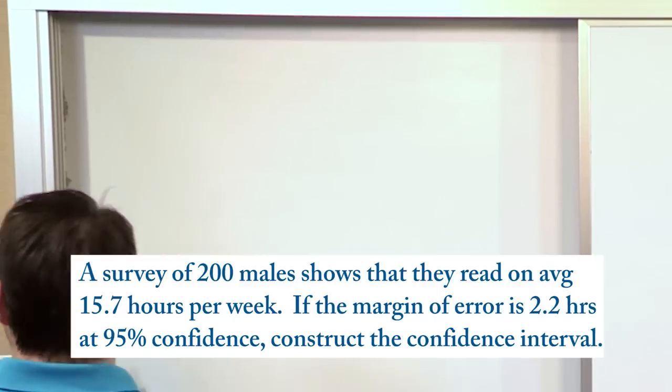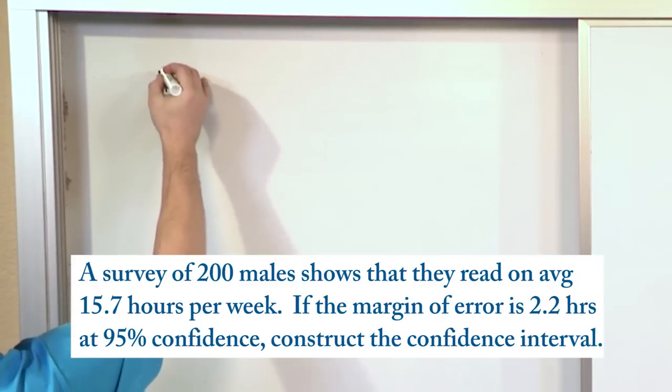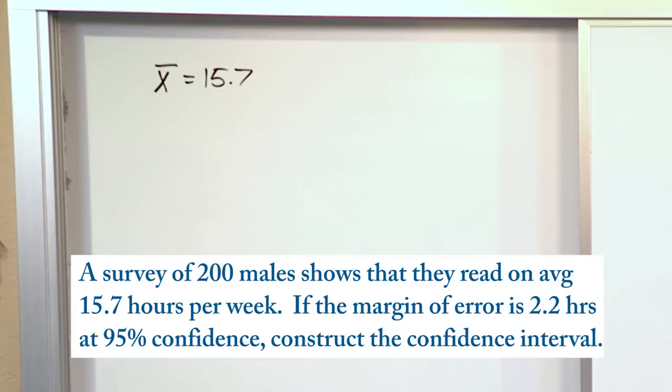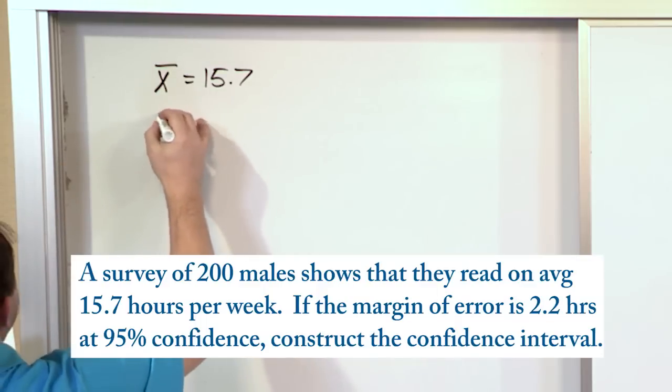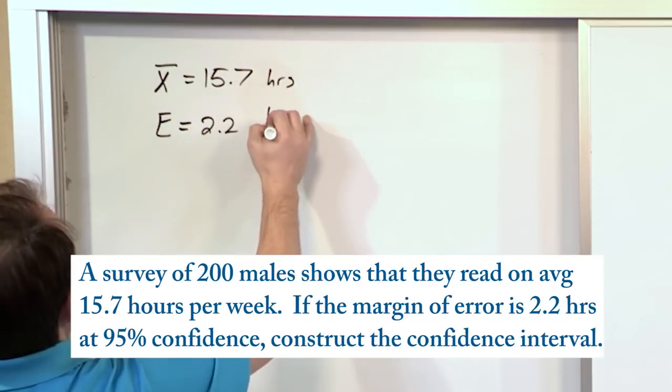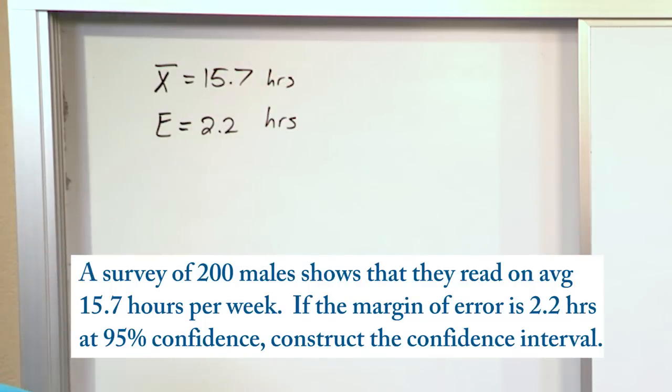We know from the problem that the sample mean x̄ equals 15.7 hours. That is what we surveyed from 200 males. And we also know the margin of error, E, we said we would denote that with E, is 2.2 hours. And we need to calculate a confidence interval.